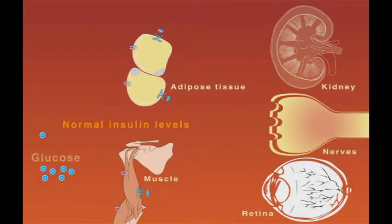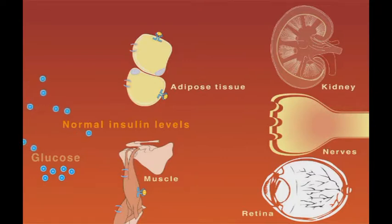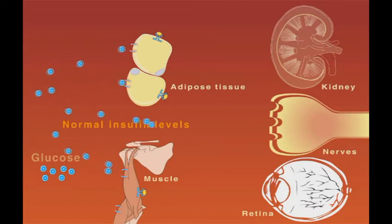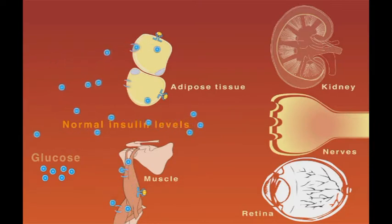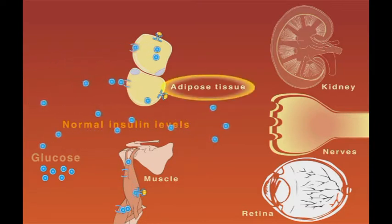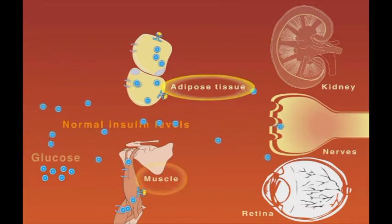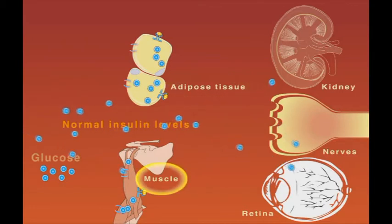Glucose is transported into the cells by two mechanisms, either insulin-dependent or insulin-independent. The main tissues that depend on insulin for glucose uptake are adipocytes and skeletal muscle cells.